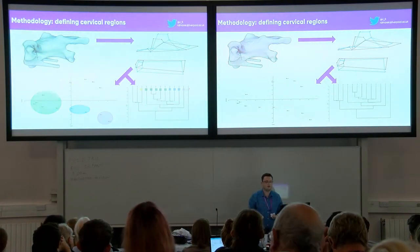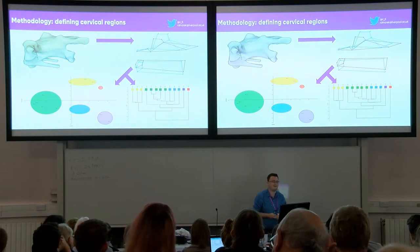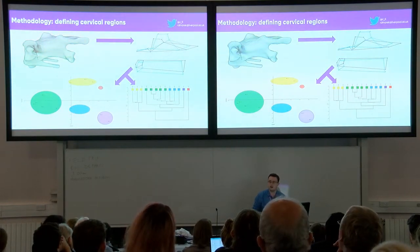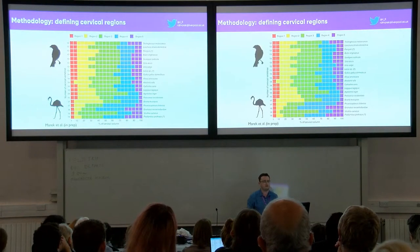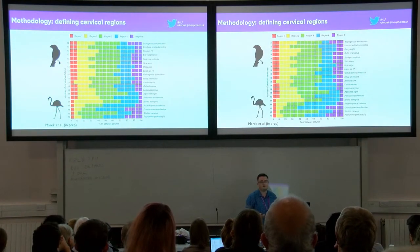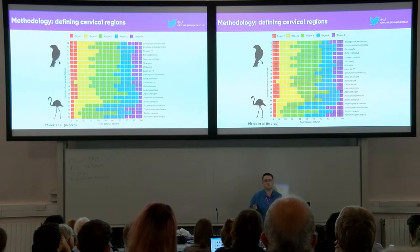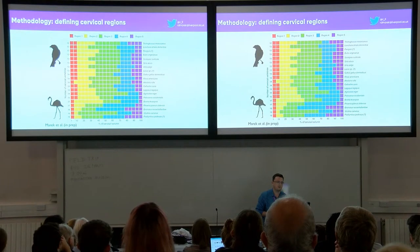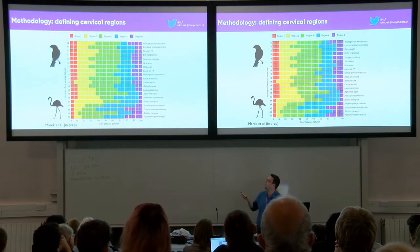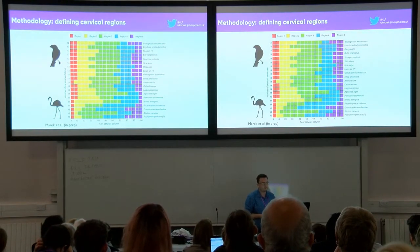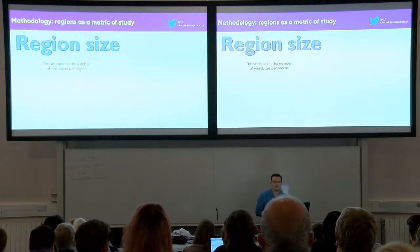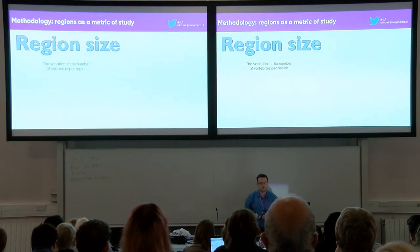Based on distance measures and partly by eye, I identified the regions. The first big result is that we see five cervical regions across all birds. Not exactly surprising, but it's a foundational result that I base my homology on. The first thing to notice is that we see a huge range in region size between different birds. Region size, just to remind everybody, is the variation in number of vertebrae per region.